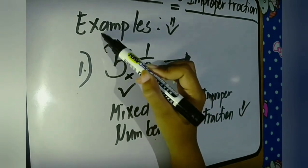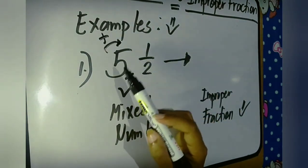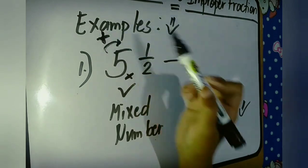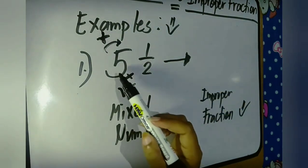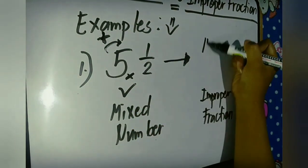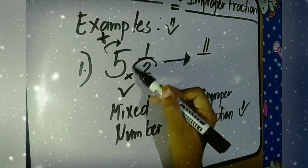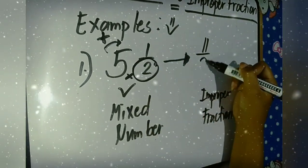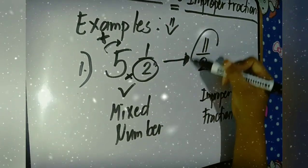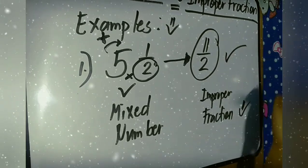After that, we add the numerator which is one. Five times two is ten, plus one is eleven. Then copy the denominator two. The final answer is eleven over two.